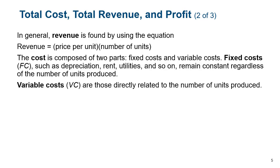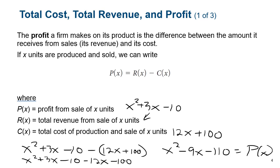Revenue is found using the equation: revenue equals price per unit times number of units — that's a basic revenue function. Cost is composed of two parts: fixed cost and variable cost. In the cost function example, the fixed cost was 100 and the variable cost was 12x — $12 times every unit produced. A basic revenue function would simply be the price times x.